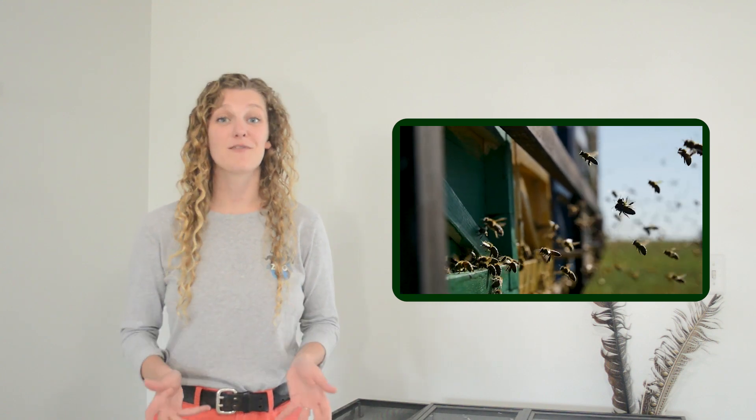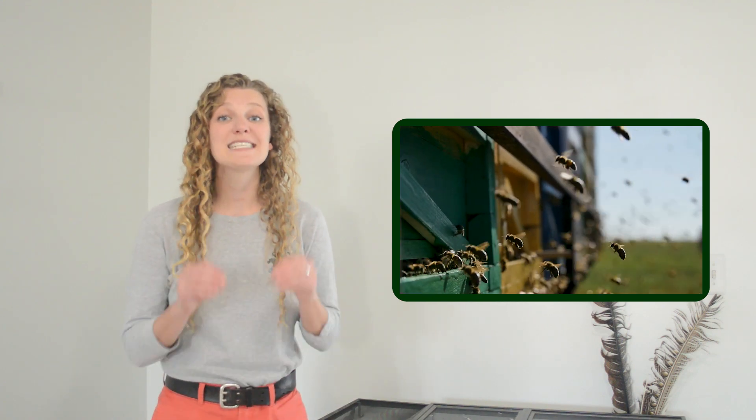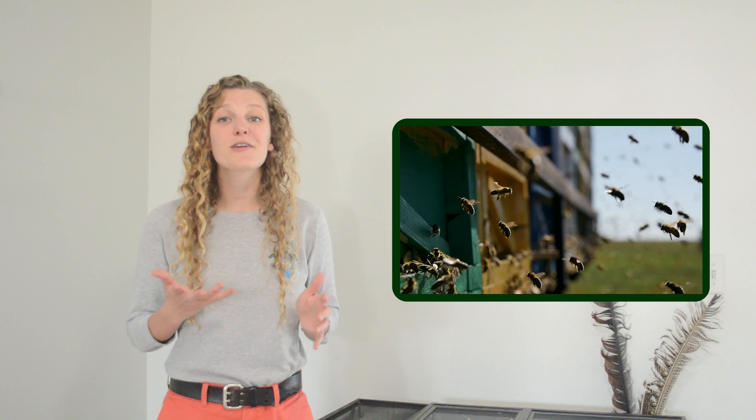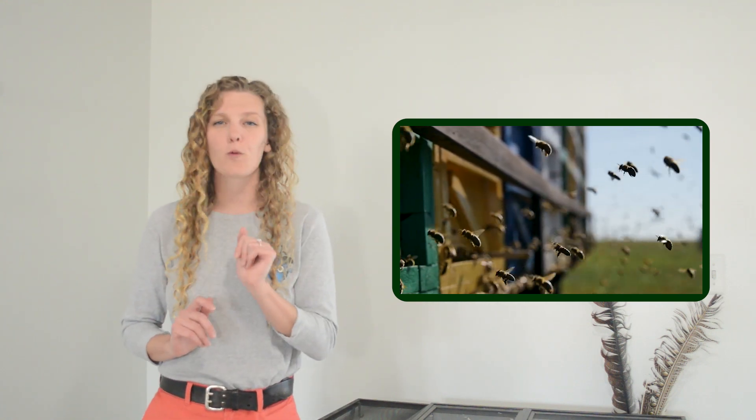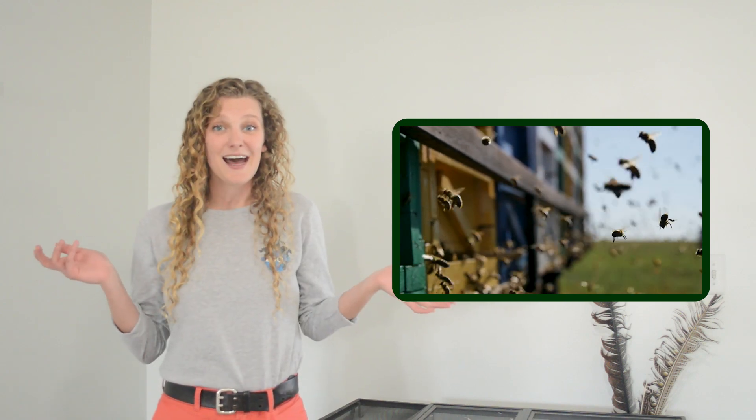Buzzing bees are some of the most iconic sounds of summer. There are more than 20,000 different species of bees and they're found on every continent except for Antarctica. Bees live in so many different types of habitats, everywhere from rainforests to grasslands to deserts. We even find some bees in the tundra where it's freezing cold.